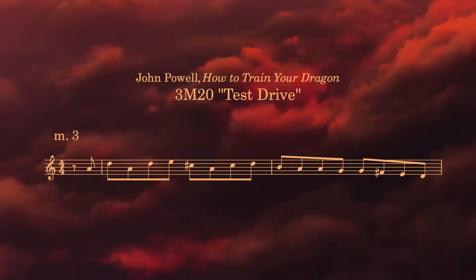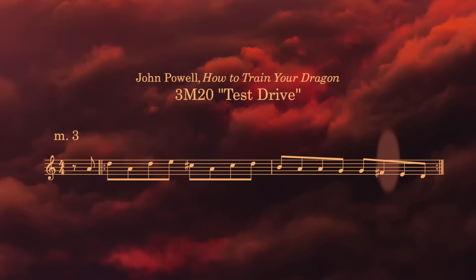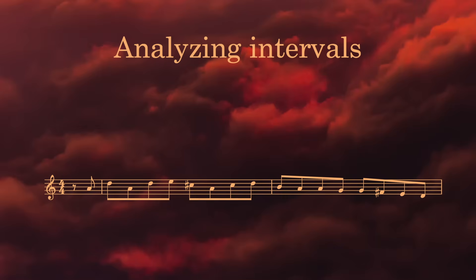Now we can go back to John Powell's theme from How to Train Your Dragon. I think it also has a specific connection with the Night Fury dragon named Toothless, who Hiccup becomes friends with. For us to harness this theme with freedom and nuance, we need to figure out what its most important intervallic characteristics are by chunking patterns that repeat and noticing essential motion between strong metric locations.